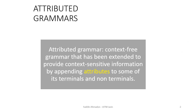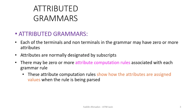Attributed grammar can be described as context-free grammar that has been extended to provide context-sensitive information by appending attributes to some of its terminals and non-terminals. The main difference is that terminals and non-terminals inside the grammar can have attributes in the form of subscripts — smaller fonts next to the symbols. Each grammar rule may also have attribute computation rules, which show how we assign values to attributes when the rule is being parsed.